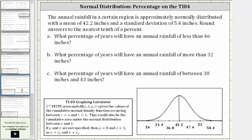The annual rainfall in a certain region is approximately normally distributed with a mean of 42.2 inches and a standard deviation of 5.4 inches. We're told to round answers to the nearest tenth of a percent.